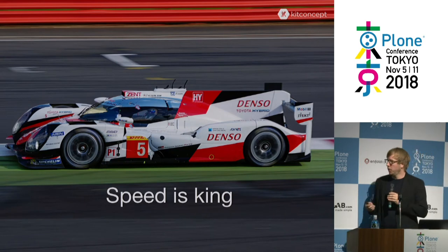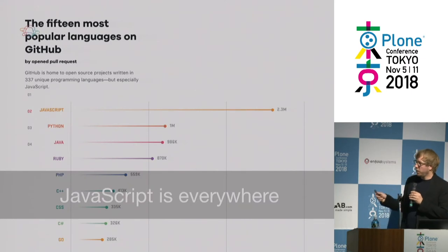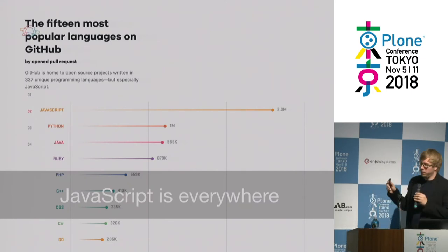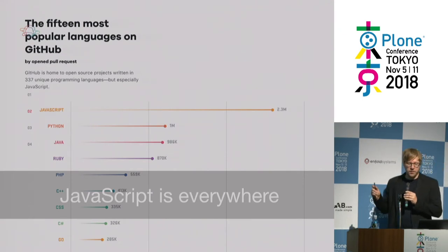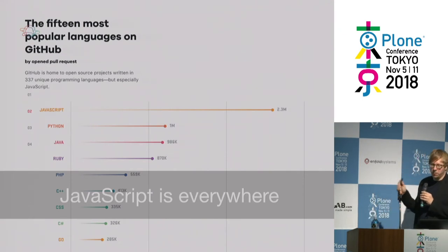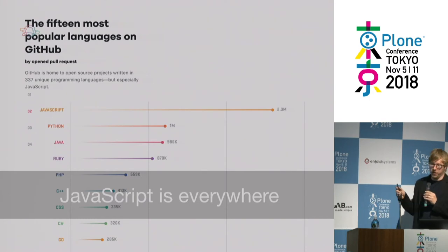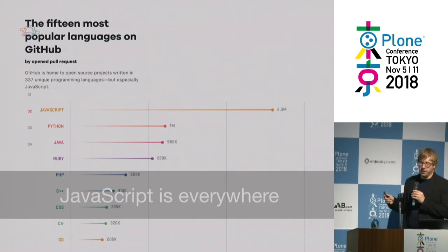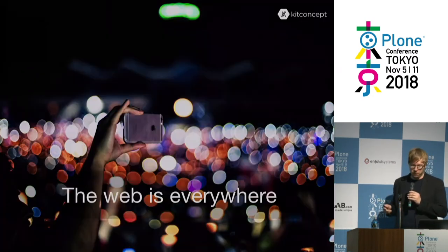I recommend going to webpagetest.org and trying your regular website to see how long it actually takes to load on 3G. If you manage to be under three seconds, that's already not bad, but you might already lose one third of your users. Google also added a penalty to slow sites and downranks them if they are slow. People no longer expect slow websites. Another important change is that JavaScript is everywhere. GitHub does a report every year, and JavaScript has more than double the number of commits than Python. In 2018, web development means JavaScript.